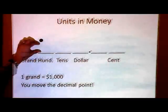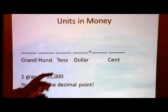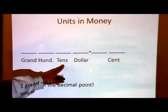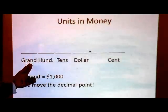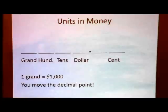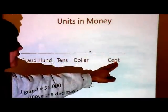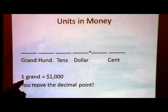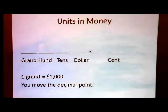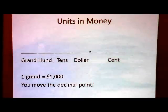In terms of units, you know that we have a decimal point, and in the very first column this is the dollar column. The next column over is tens, then hundreds, then thousands. Because we're talking about money, that thousands column would be the grand column, and this is the dollar, or ones, column. On the other side of the decimal point we have the cent column. One grand equals one thousand dollars — what did you do? You just moved the decimal point. That's what we'll be doing: just moving the decimal point.